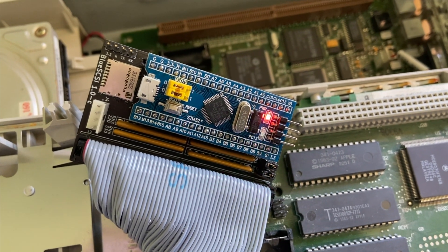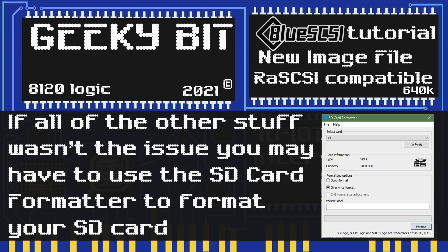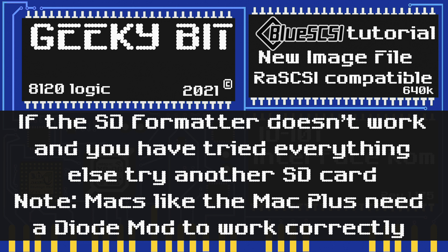If this was a kit and not a pre-assembled unit, let's take a look at the solder points on the micro SD card adapter and make sure we have them correct. This image shows them all soldered correctly - you may have a little more solder than this on yours, but make sure there are no solder bridges. If that looks good, let's use the SD Card Formatter utility and do an overwrite format on our SD card. You can download it from a link in the description. If it's still not working after that, try a different SD card, preferably another brand.